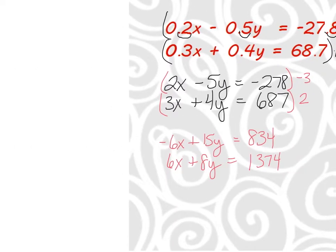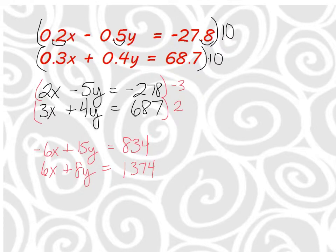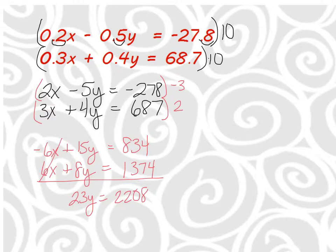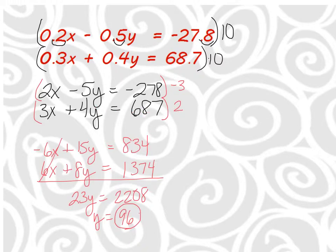The x's drop out beautifully. 15y and 8y gives 23y. Adding those constants together gets 2208. Dividing by 23 gives y equals 96. Now take that and plug it back into one of the equations. You could use the originals or the cleared versions — either way is fine.